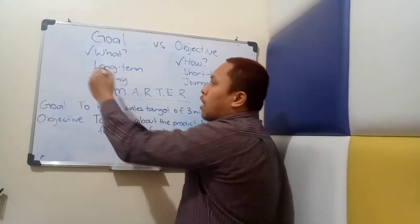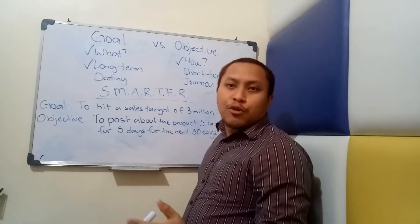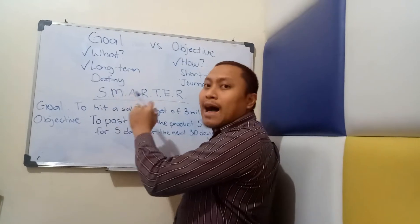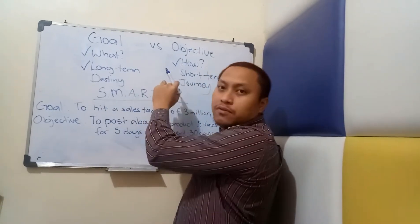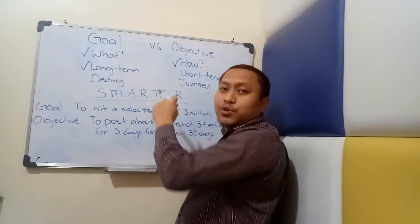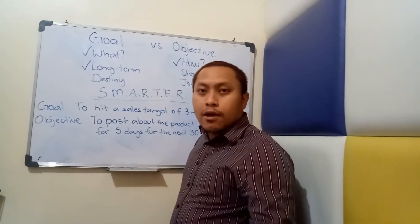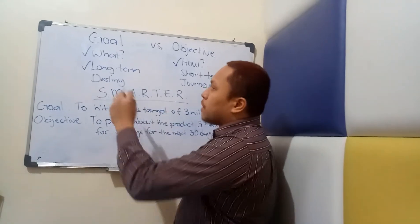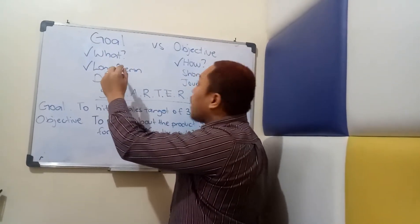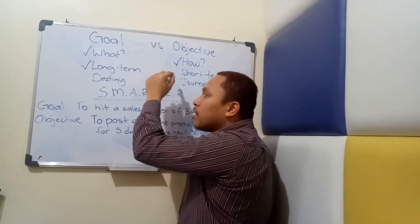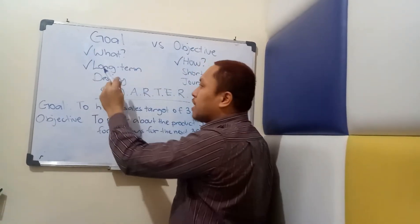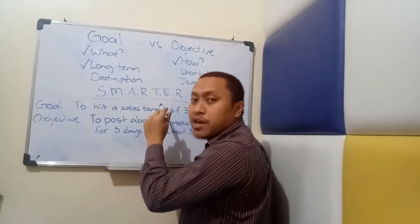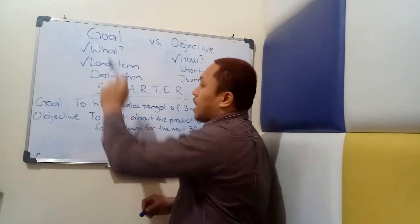One more thing is that a goal is always long term — be it one year, two years, three years, or five years. A goal is always longer in time frame compared to an objective. On the other hand, an objective is short term: daily, weekly, monthly, biannually, quarterly, etc. Because the goal is your answer to the question 'what' and the objective is the answer to the question 'how,' the goal is the destination, whereas the objective is the journey or the experience that you have to go through to attain the goal.